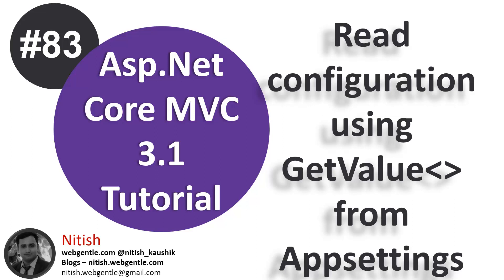Welcome again to ASP.NET Core Tutorial. We are working with the appsettings file and learning how to read configuration from it. In previous videos we covered a few ways, and now we will learn a few more ways. Today we will understand the getValue method.